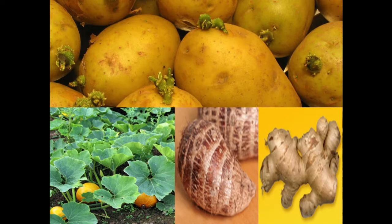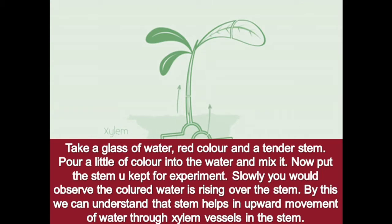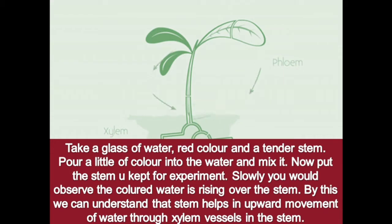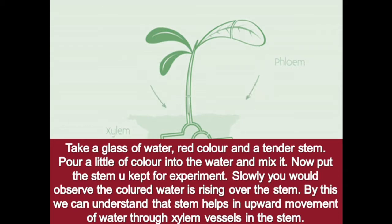If you want to see conduction through the stem, take a glass of water, add red color, and place a tender soft stem in it. Pour a little color into the water and mix it, then put the stem in for your experiment. Slowly you will observe the colored water rising up the stem. After some time, cut it transversely and you will find the color inside the middle portion of the tender stem. By this, we can understand that the stem helps in upward movement of water through xylem vessels.